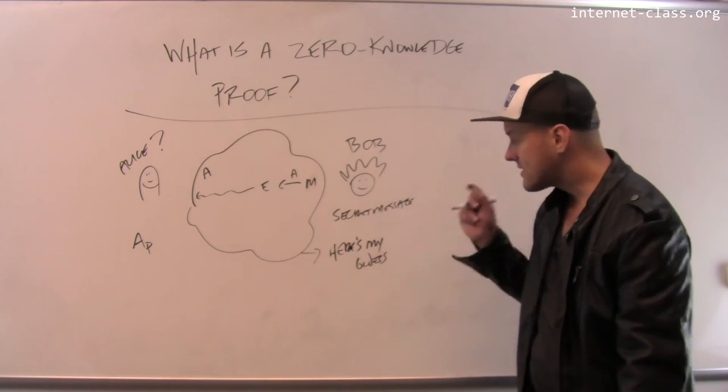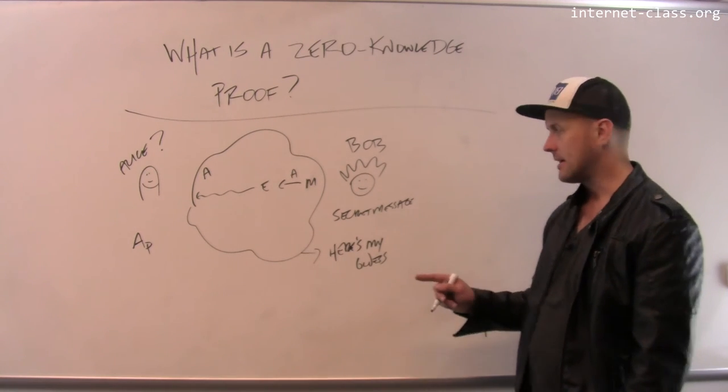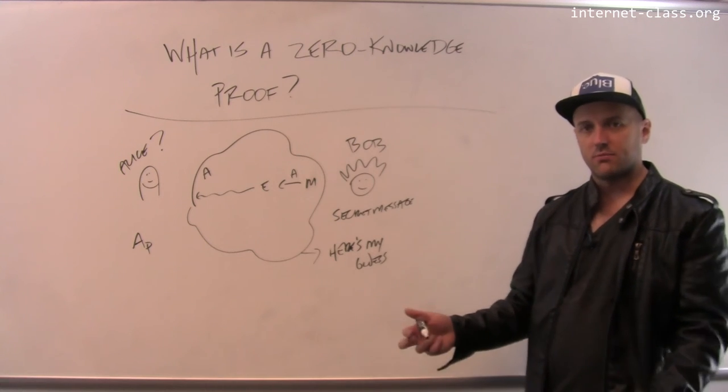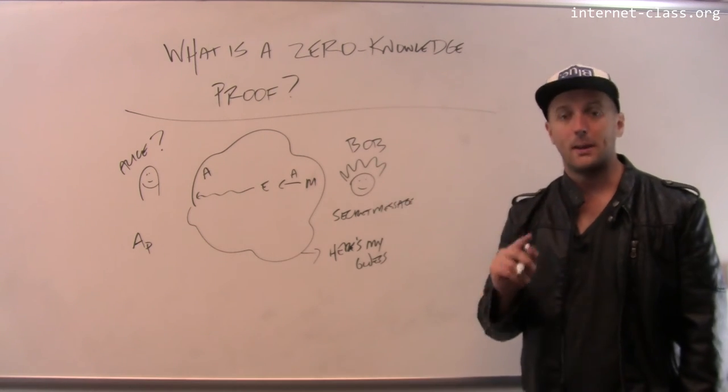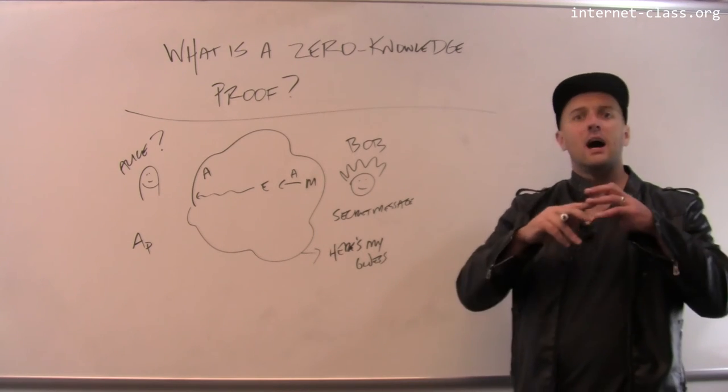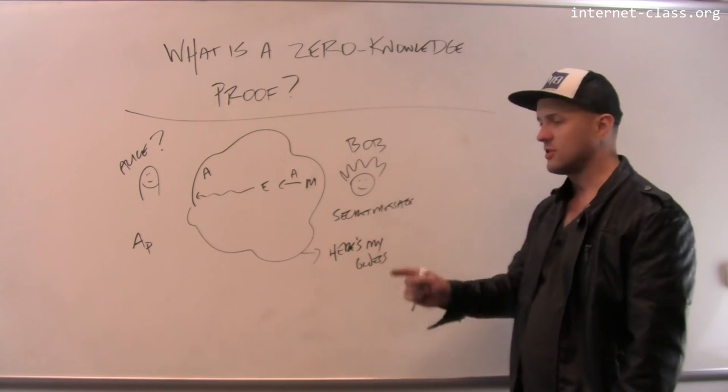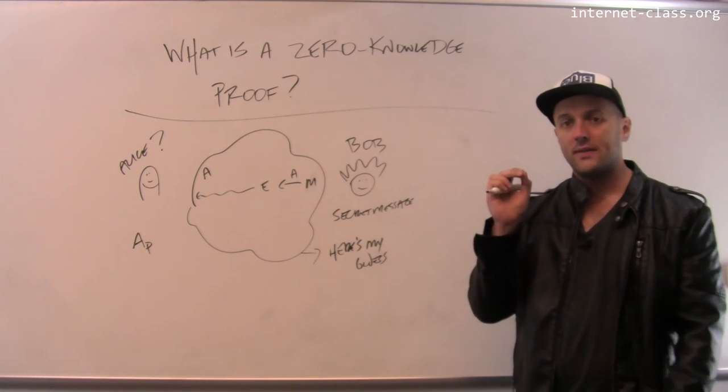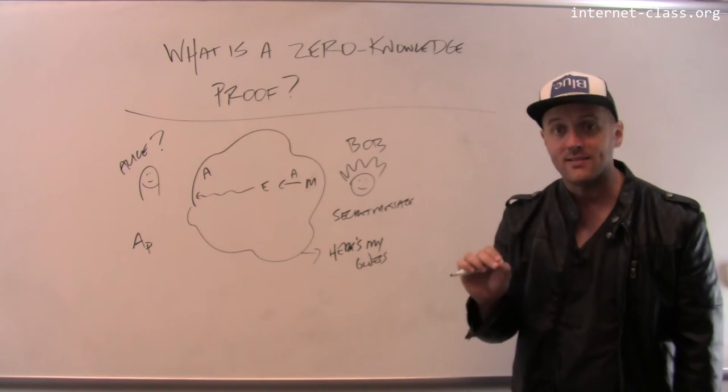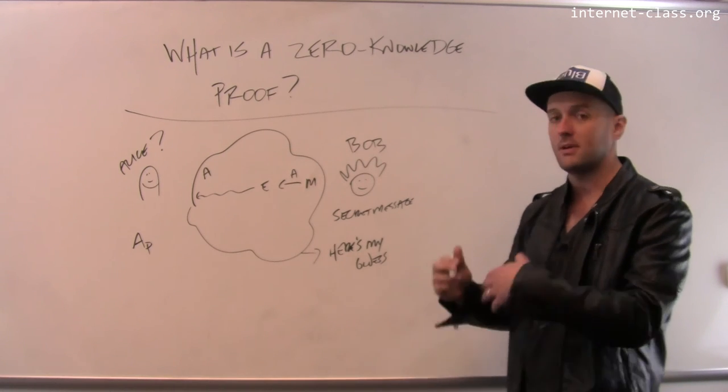Now, there is some small probability here. And in many of these interactive proofs, there's some probability that Alice will get the right answer, the imposter Alice. So let's just say out of blind luck, let's say that Bob's message is only one character or something. So there's some probability that the imposter Alice will guess correctly. So that probability might be small.